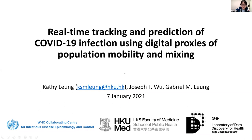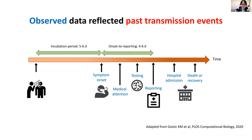I'll first start with a very brief introduction of the natural history of COVID-19. The figure shows a typical symptomatic infection. A person is exposed and it takes about five to six days to develop symptoms, because the mean incubation period is about five to six days. In Hong Kong, it takes another four to six days to be reported to the public health authority — usually two or three days to seek medical attention and another one to two days to get COVID-19 testing confirmed.